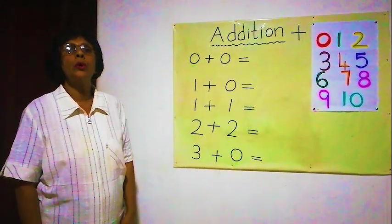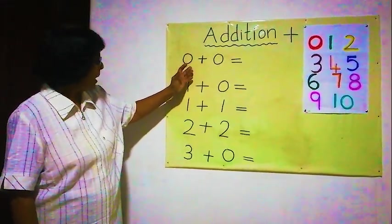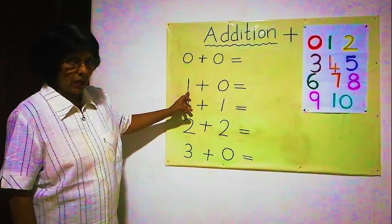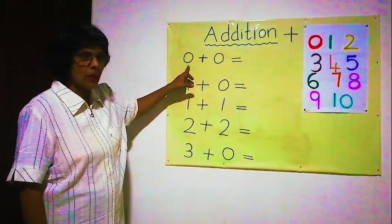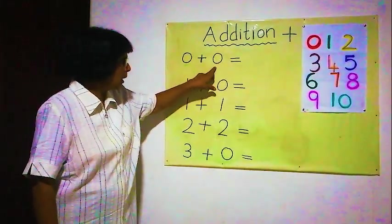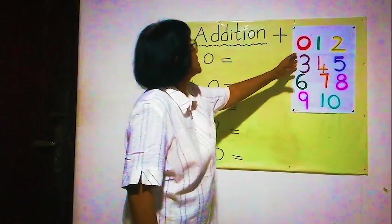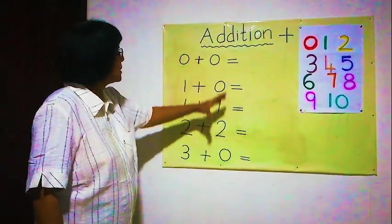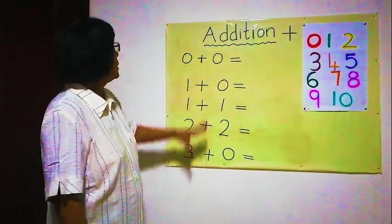Hello children, now we are going to do the same lesson: additions. Here you can see the numbers. Earlier we did with pictures, now we are doing the lesson with numbers. The first number is zero plus zero equals zero. To make the lesson easy, I have fixed some numbers here. We must know the numbers to write the answer, otherwise the sums will be wrong.